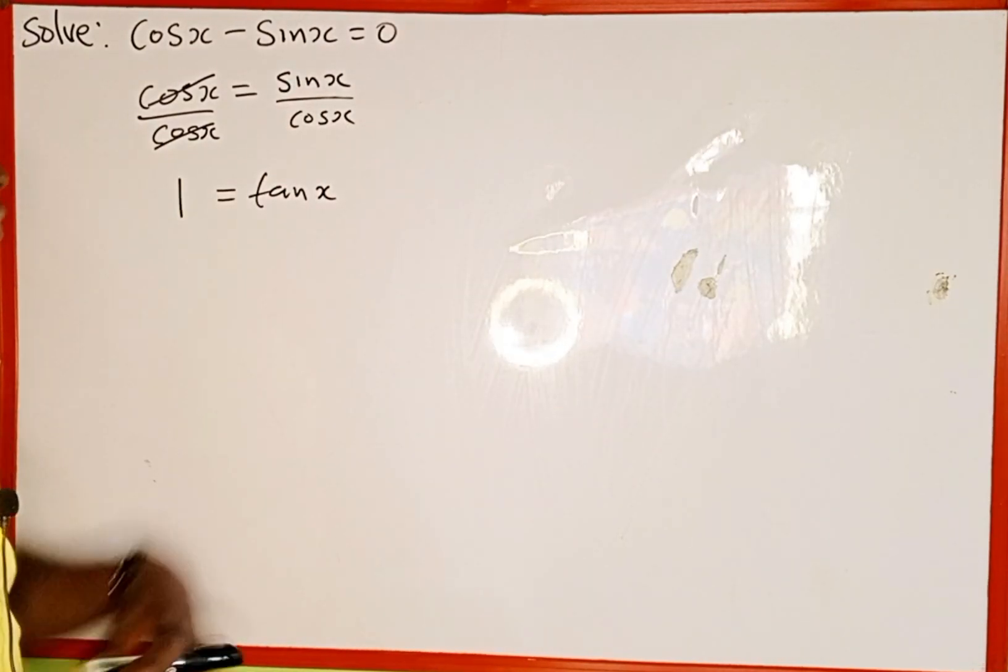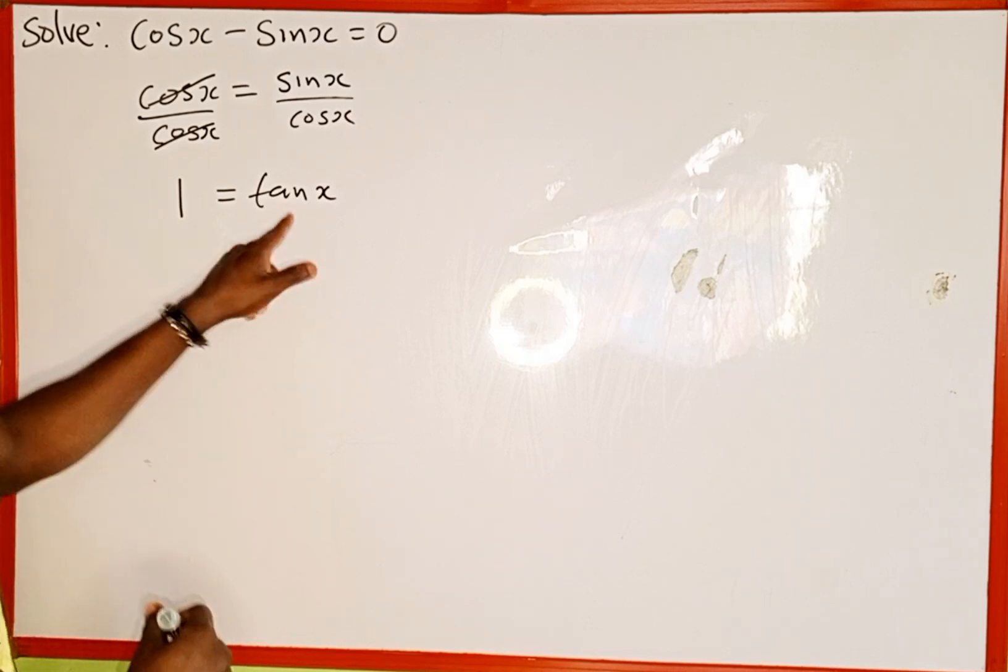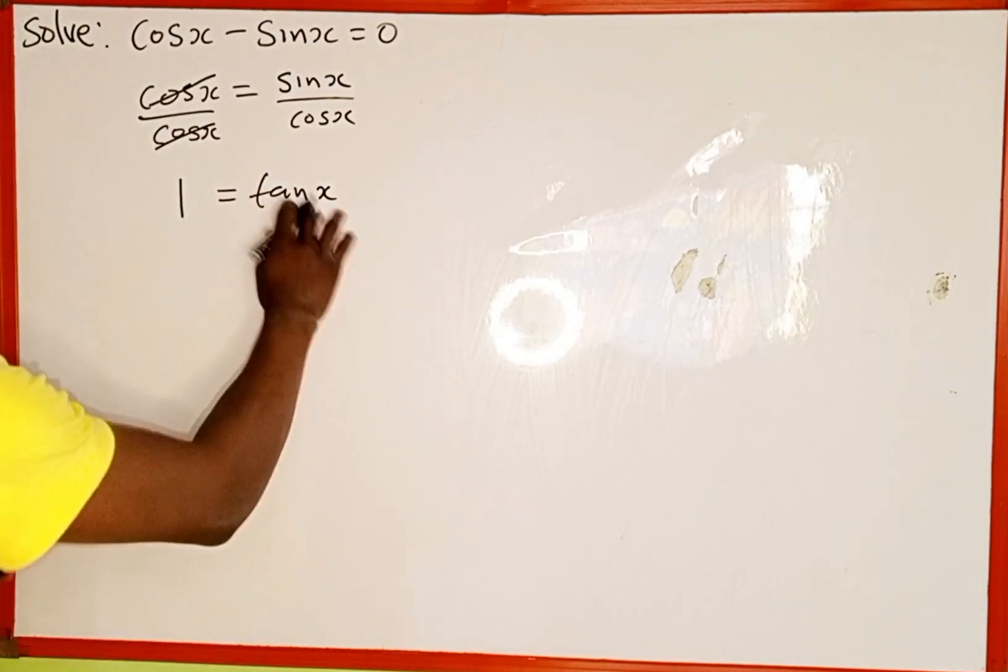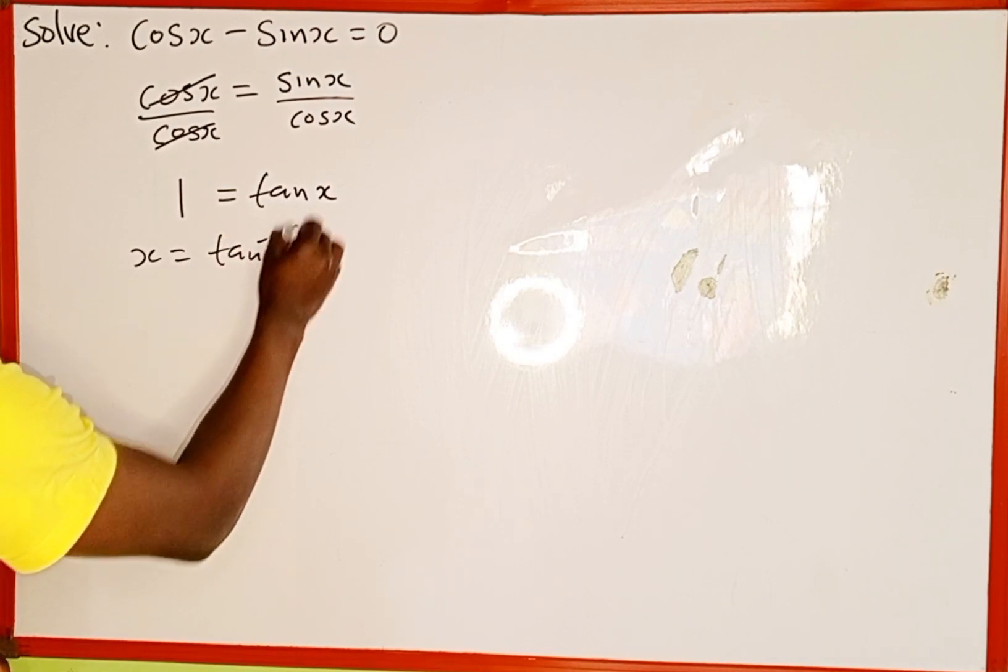Now to make x the subject of the formula here, we are going to take the tan inverse. So if you take the tan inverse here, this place will remain only x, which is equal to tan inverse of 1.